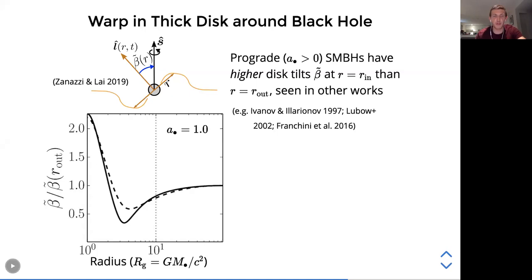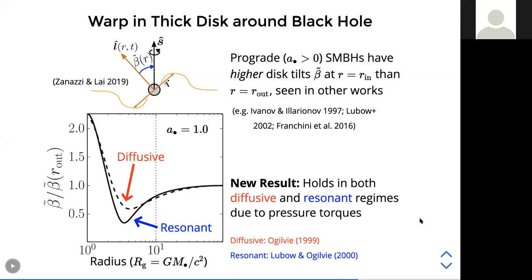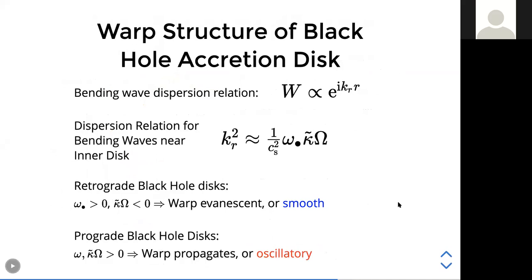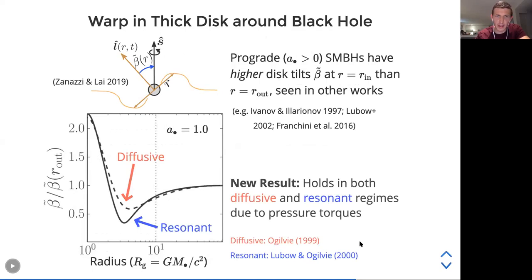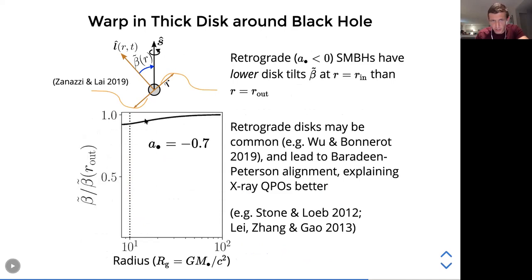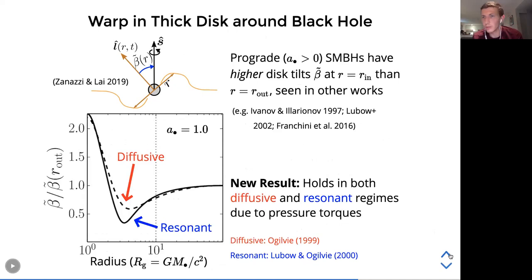Question from Hamza: in the prograde mode, does the warp die out over distance? Yes — for a retrograde disk, the warp becomes evanescent approaching the inner edge, with the tilt at the inner edge smaller than at the outer edge. For a prograde disk, the combination of nodal and apsidal precession causes the disturbance to be highly oscillatory rather than evanescent. Previous works argued that in the diffusive regime a TDE disk would never be highly oscillatory, but we find that's because they omitted the important effect of apsidal precession near the inner disk edge.